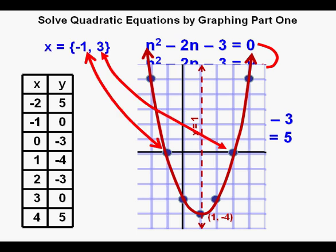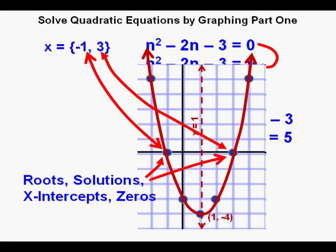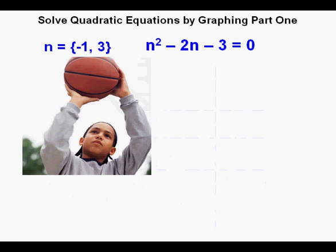After graphing, he can pinpoint the solutions where the function crosses the x-axis at x = -1 and at x = 3. These solutions are also called roots, x-intercepts, and zeros. Going back to the original unknown, n, he says that the solutions for his original equation are -1 and 3.